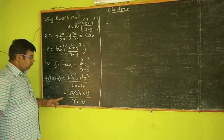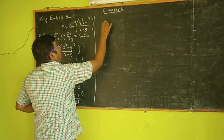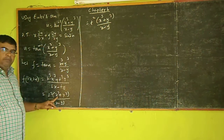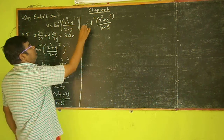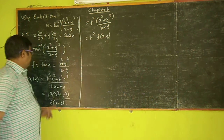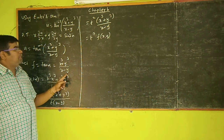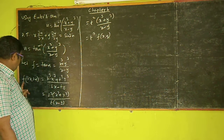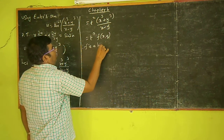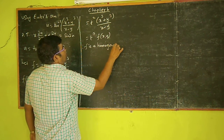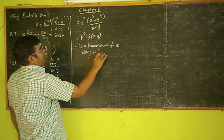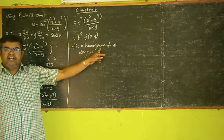So we get t cube of x cube plus y cube divided by t of x minus y. Which is equal to t cube by t, which is t squared, times x cube plus y cube by x minus y. That is t squared into f of x, y. Therefore, f is a homogeneous function of degree 2.